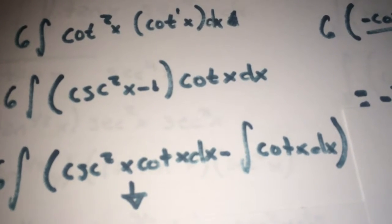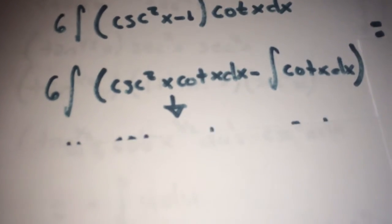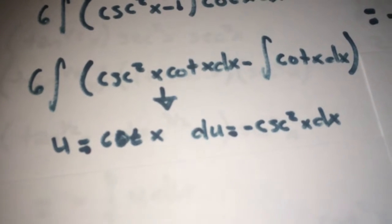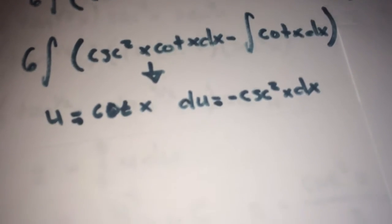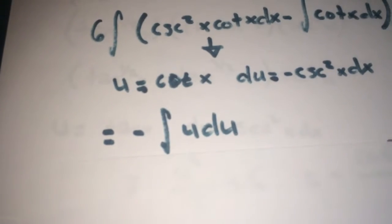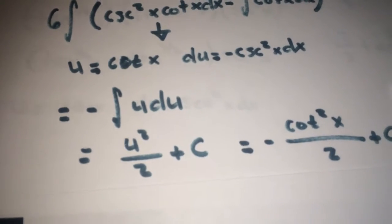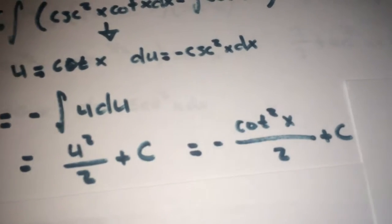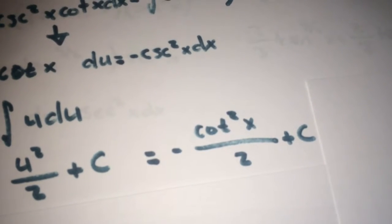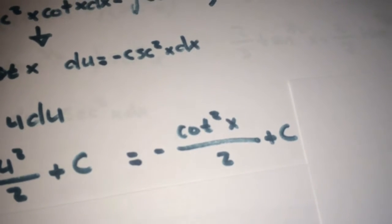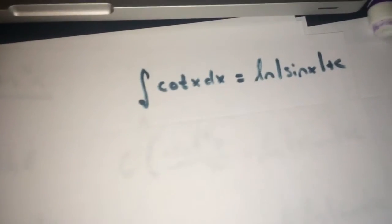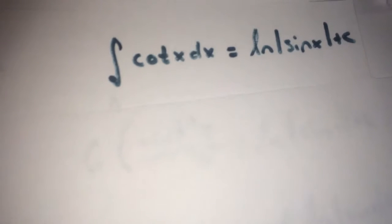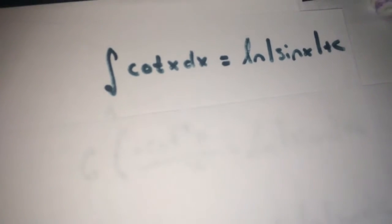Distributing out the cotangent gives a double integral. Focusing on the first integral, use u-substitution for cosecant squared x times cotangent x dx: u equals cotangent x, and du equals negative cosecant squared x dx. That gives the negative integral of u squared du, which integrates to negative u squared over 2 plus c, so plugging back in gives negative cotangent squared x over 2 plus c. For the second integral, the integral of cotangent x dx equals ln|sine x| plus c.